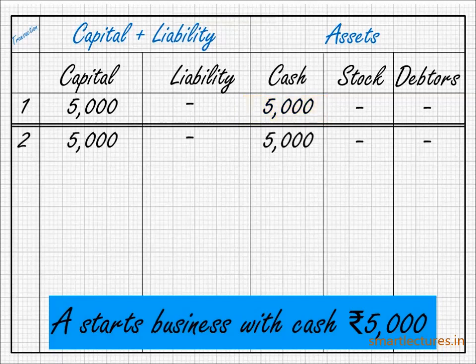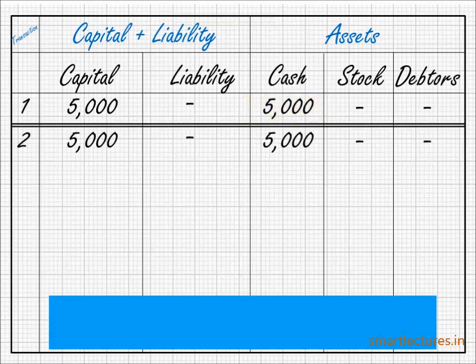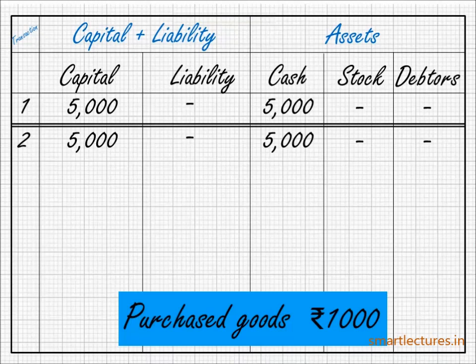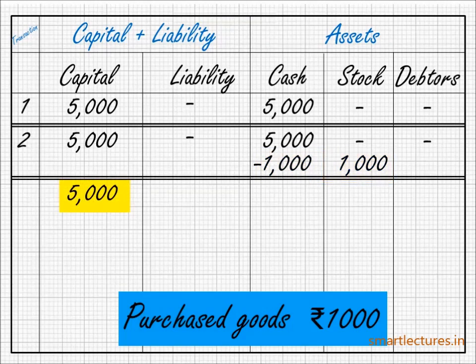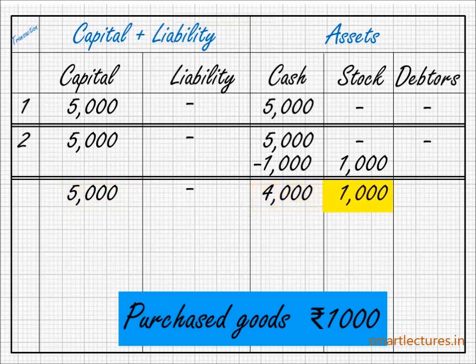Next transaction: Purchase goods Rs. 1000. These were cash purchases. So in the cash column, 5000 minus 1000, and on the stock side, plus 1000. The new equation will be: capital 5000, cash 4000, and stock 1000.